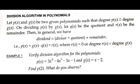Let P(x) and G(x) be two given polynomials such that the degree of P(x) is greater than or equal to the degree of G(x). On dividing P(x) by G(x), let Q(x) be the quotient and R(x) be the remainder. Then in general, dividend equals divisor times quotient plus remainder. This relation is also known as Euclid's division algorithm, where R(x) can be zero or the degree of R(x) must be less than the degree of G(x).